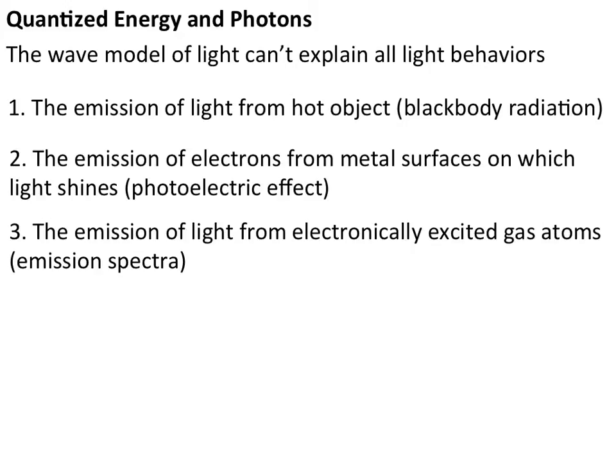We've now looked at the emission of light from hot body objects and how that works. We've also looked at the photoelectric effect and the wave-particle duality of matter. The last thing that has not been able to be explained by the basic wave model of light is the emission of light from electronically excited gas atoms, or the production of an emission spectrum. We're going to look at what an emission spectra is and what it means to be an electronically excited atom.